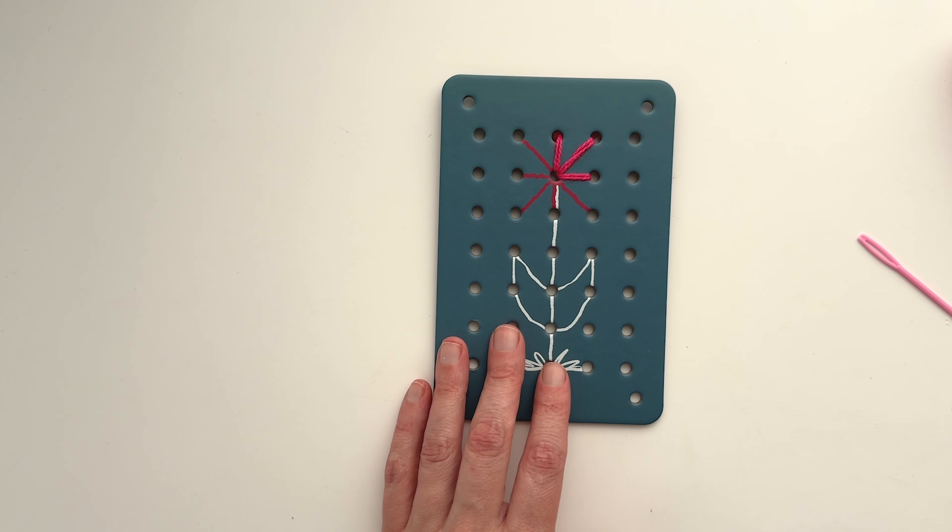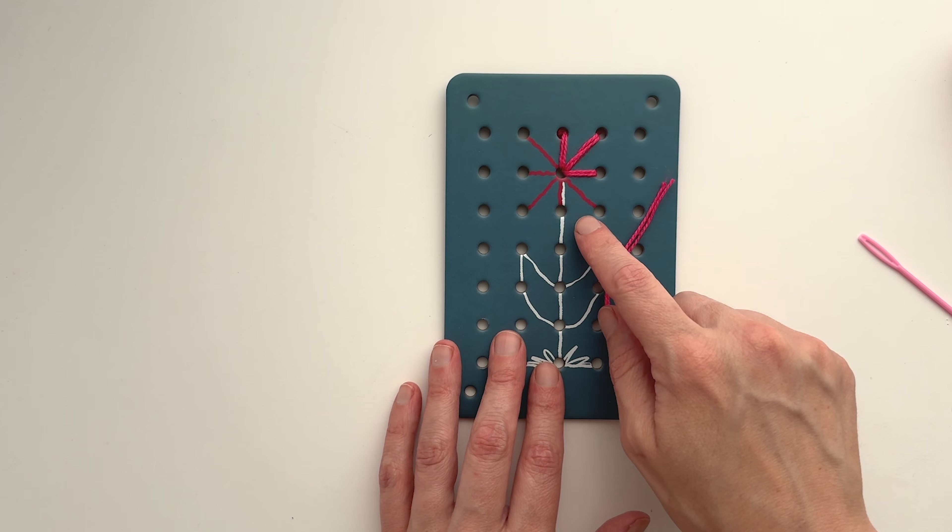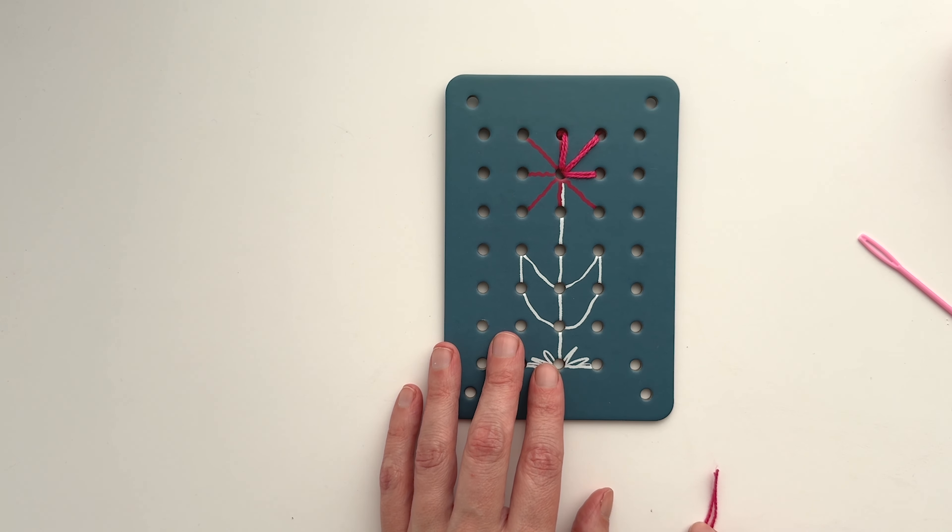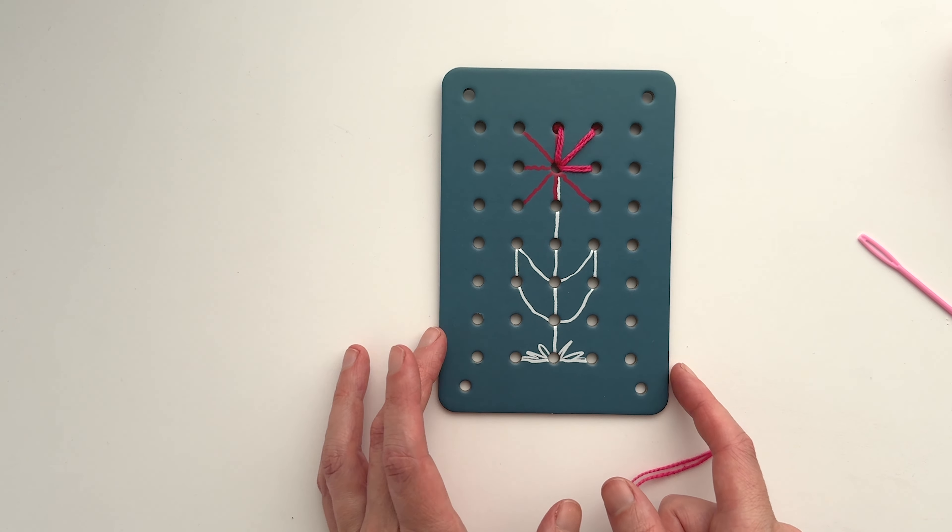Stitch and Play cards can be reused over and over again. Just cut the yarn off on the card when you're done and stitch a new project next time.